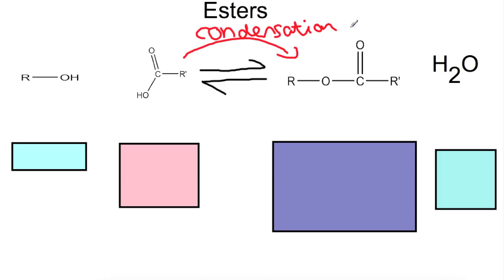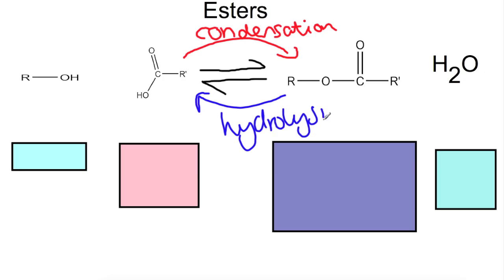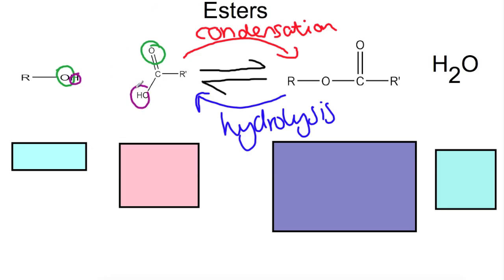The reverse reaction, where water is used to split up your ester, is a hydrolysis reaction. We looked at this briefly in National 5, but here we'll go into more detail. Through experiments it's been found that the oxygen from the alcohol remains attached to the alcohol group, and the oxygen from the carboxylic acid group leaves with the H to become the water molecule.